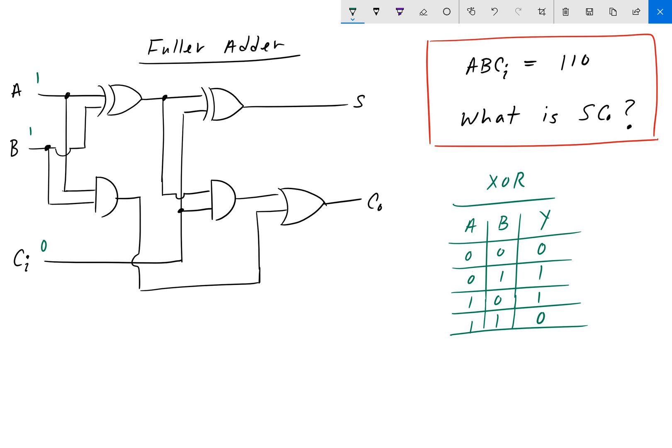So because A is 1, we have 1 on the input of this XOR gate. We also have a 1 on this AND gate here on the bottom. B is also 1, so this XOR gate will be 1, and the AND gate will also be 1.